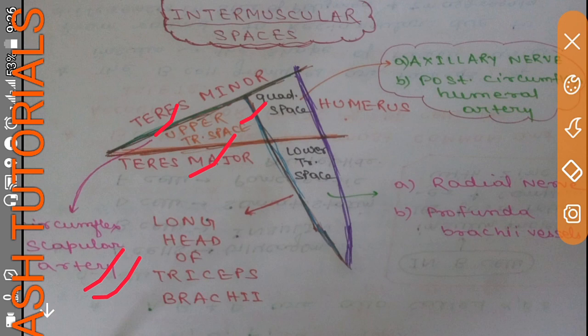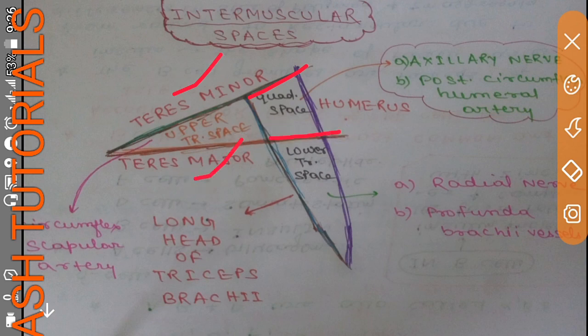The circumflex scapular artery goes to anastomose around the scapula. Now coming to the quadrangular space: the superior boundary is formed by teres minor, inferior boundary by teres major, medial boundary by the long head of triceps brachii, and the lateral boundary is formed by the anatomical neck of the humerus.